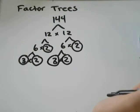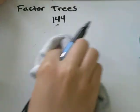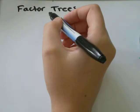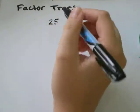And that's it really for making a factor tree. Sometimes your factor trees don't have a lot of branches. 144 has quite a few. Let's think of another number, maybe 25.